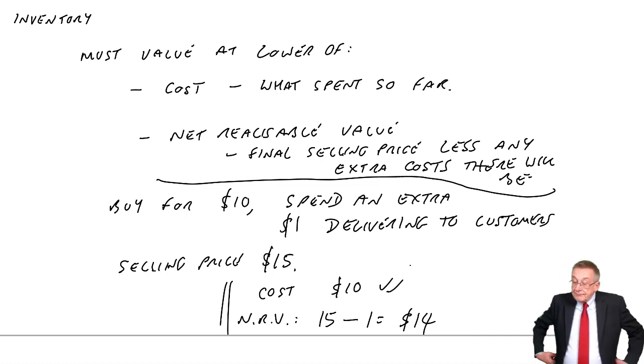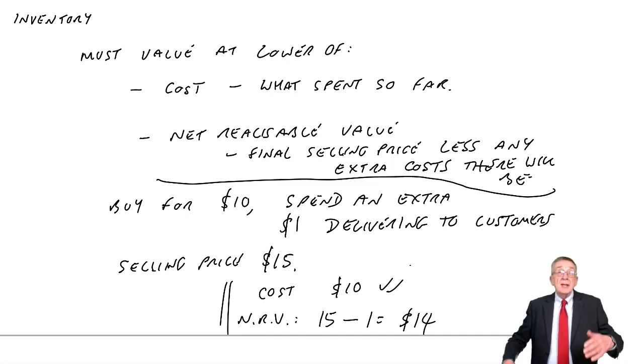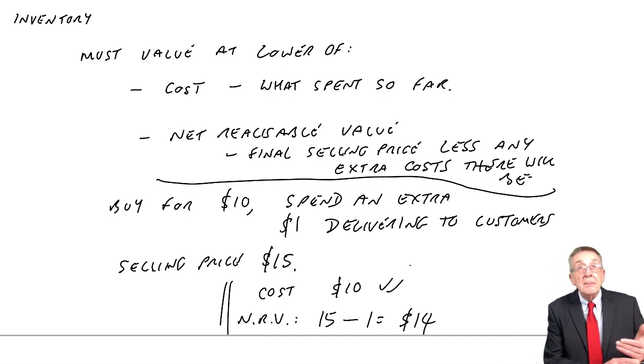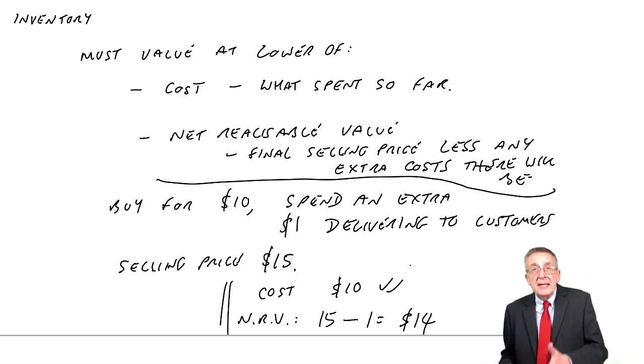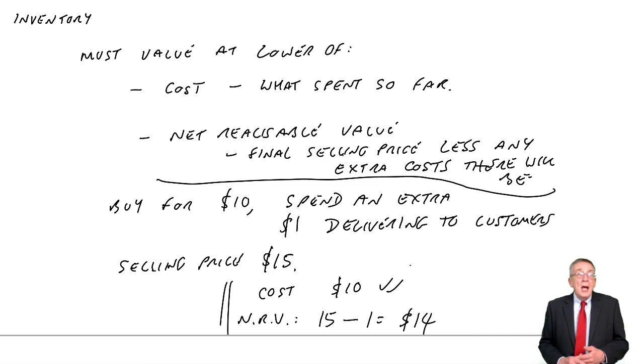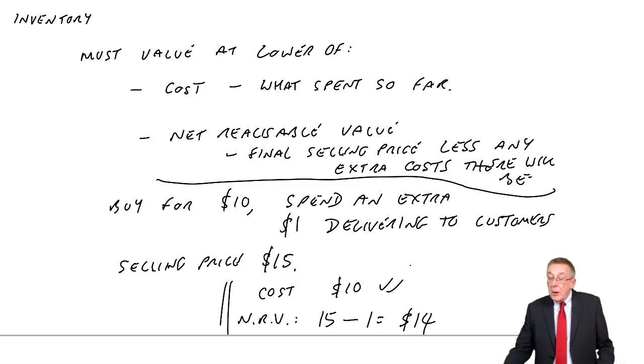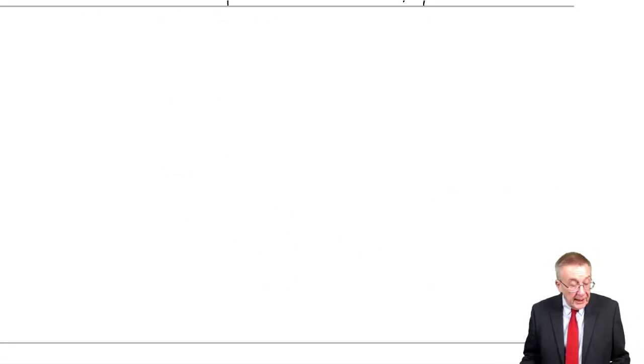And again, you value at the lower of the two, which in this case would be the $10. So, be careful, net realizable value. Final selling price, but any future costs will be, it may be the costs of delivering them, which I haven't spent yet, but will have to. Or maybe we have to spend money on packing them. They're not packed yet, but we will have to pack them, and that will cost money before we sell them. Or it could be they cost me $10, but before I sell them, maybe some of them need a bit of work doing, repairing them. We haven't spent that money yet, but we will have to. Well, fine. We subtract it to get the net realizable value.